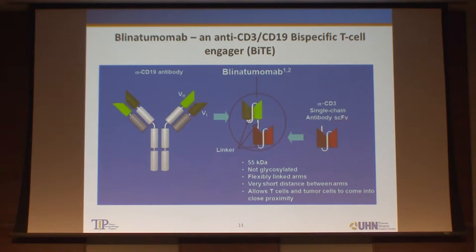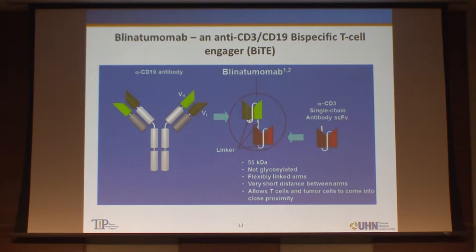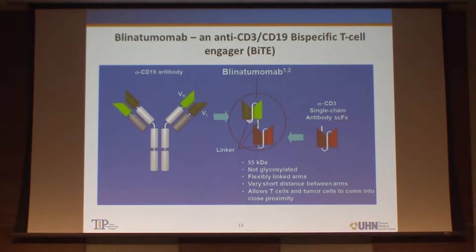The compound that has been in development the longest in this setting was generated in Germany and is called blinatumumab — an anti-CD3, anti-CD19 bispecific T-cell engager, or BiTE. CD19 is seen on all mature B-cells, so it's a very relevant target for treating B-cell malignancies, and CD3 is found on T-cells. The linker is another interesting piece of the technology; the antibody itself isn't glycosylated, keeping things very short for steric purposes to bring the two types of cells together in close proximity.